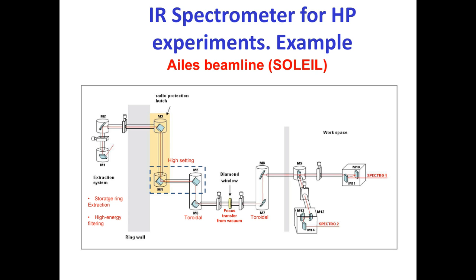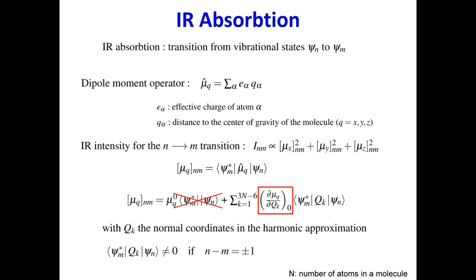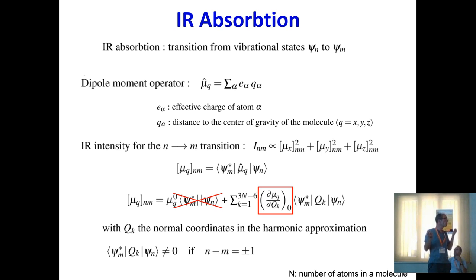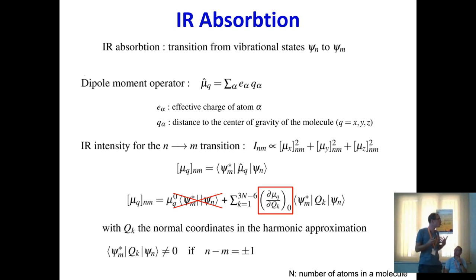Before going through examples, I will give some basics on the fundamentals and selection rules of vibrational spectroscopy. In infrared absorption, we directly absorb light going from one vibrational state to another. The operator involved in this absorption process is the electric dipole moment, which can be expressed as a sum of products of the effective charge of each atom times its distance to the center of gravity of the molecule.